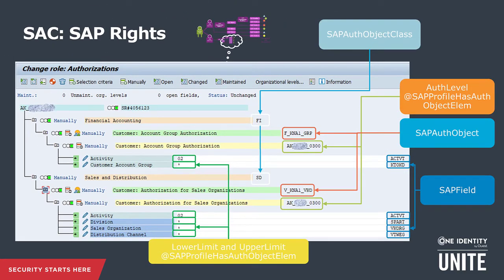When looking into a role with the PFCG transaction and editing the authorization information, we see these elements in the role authorizations. For example, FI is the SAP authorization object class. FKNA1_GROUP is the SAP authorization object. Activity and VK org (sales organization) are the SAP authorization fields. The customer account group authorization element allows activity 0 to 2 (which is 'change') on every customer account group, marked with an asterisk. Field values can contain lower and upper limits for a range of values, a list of comma-separated values, or a combination of these.